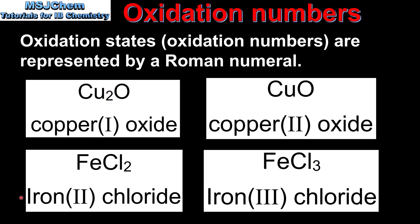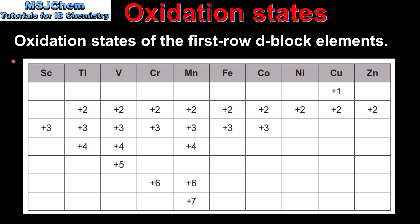Next we look at the oxidation states of the first-row d-block elements, which have variable oxidation states. Most first-row d-block elements have more than one possible oxidation state. The number of oxidation states increases until manganese, which has possible oxidation states of plus 2, plus 3, plus 4, plus 6, and plus 7. Most d-block elements have an oxidation state of plus 2, except scandium, which only has plus 3. This variability arises from the closeness in energy of the 4s and 3d sublevels.